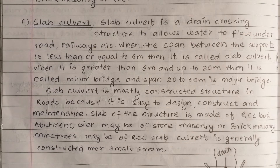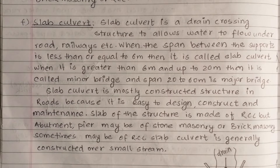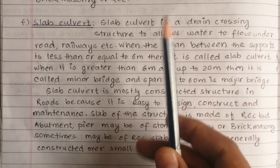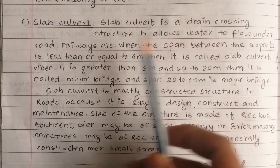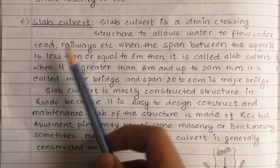Hello everyone, welcome to my channel. This is a slab culvert. A slab culvert is a drain crossing structure that allows water to flow under roads, railways, etc.